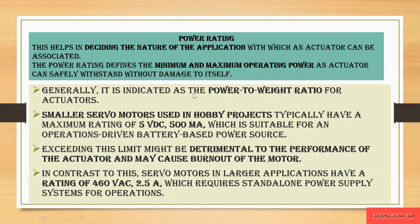Power rating is indicated as a power-to-weight ratio, which is used to select actuators for particular applications. For smaller servo motors used in hobby projects, the maximum rating is 5V DC and 500 milliamperes, suitable for battery-based power sources. If the minimum or maximum operating power is exceeded, the performance of the actuator will be reduced and there will be a burnout caused in the motor.